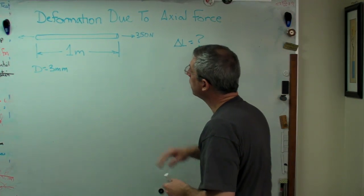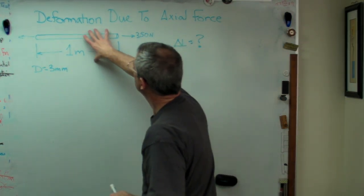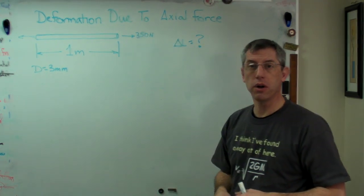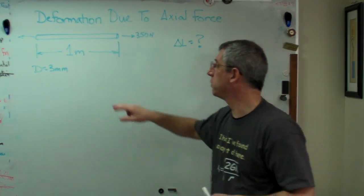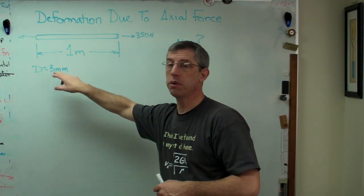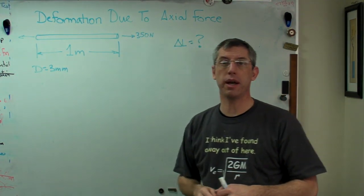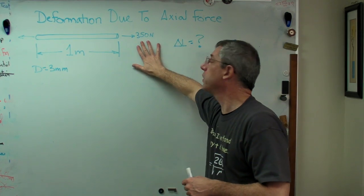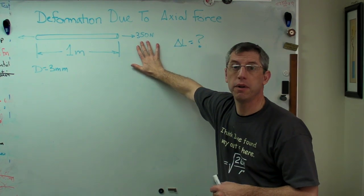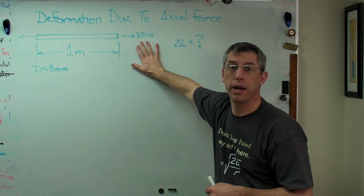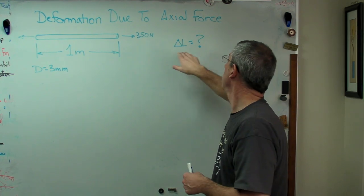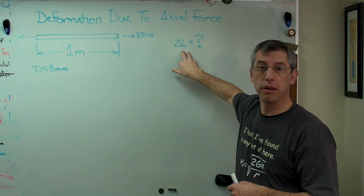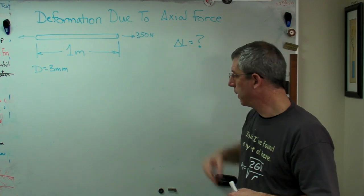Let's say we've got a one-meter-long rod that's round, three millimeters in diameter, and there's a force of 350 newtons being applied to the end. Let's figure out what the change in length is.